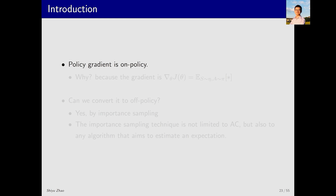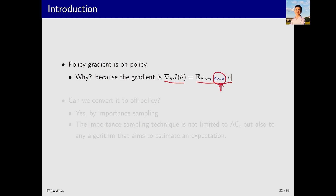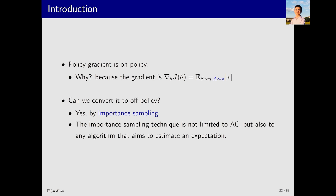The policy gradient and actor-critic algorithms we discussed earlier are all on-policy. Why? The fundamental reason is that the gradient equals an expectation, and within that expectation, action a must follow the policy pi. This means that when we sample, a must be sampled according to pi, so pi is the behavior policy. At the same time, pi is also the policy we want to update, so it is also the target policy. Since both policies are the same, the algorithm is on-policy. The question is: can we transform this into an off-policy algorithm? The answer is yes, by using importance sampling.